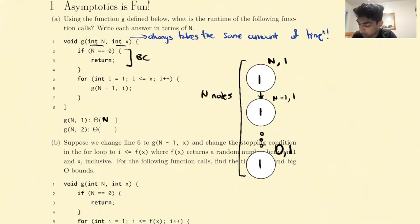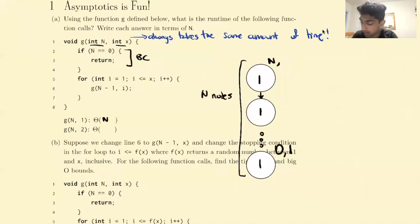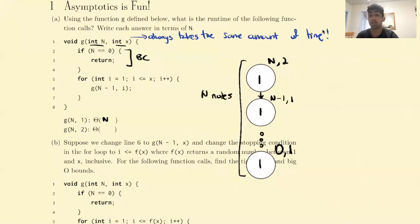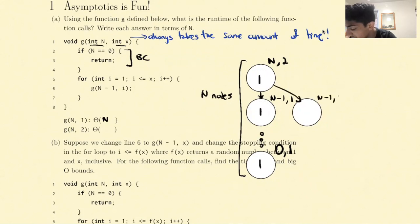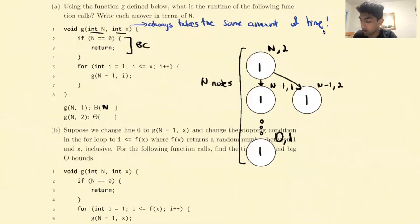Let's move on to the next example. Now we call g(n, 2). Exploring that possibility, the first call is going to be n comma 2. What's cool about this is that we will still issue the call of n minus 1 comma 1, but we will also issue another recursive call of n minus 1 comma 2. Every recursive call does a constant amount of work, so every time we see one of these circles, we fill it in with 1.